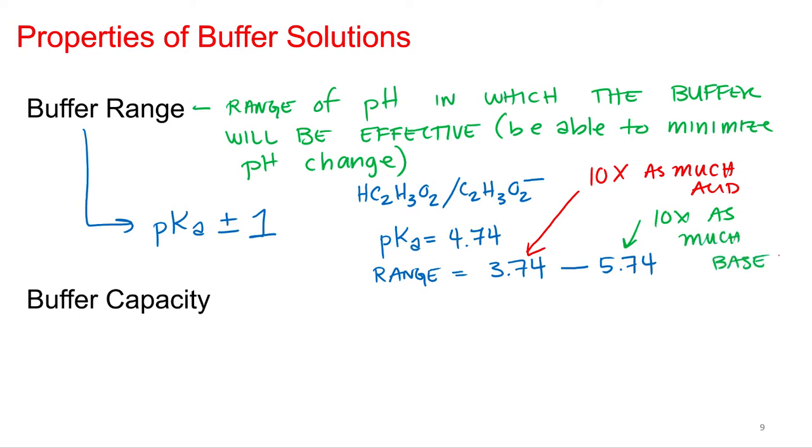And that's as far as you want to push the buffer system. So that's just a general rule of thumb. It's not binary. It's not like once you get to 3.73 suddenly it's not a buffer. It's just after that you don't have very much base so if you add less acid you don't have much base there to neutralize it. So that's like its best working range.